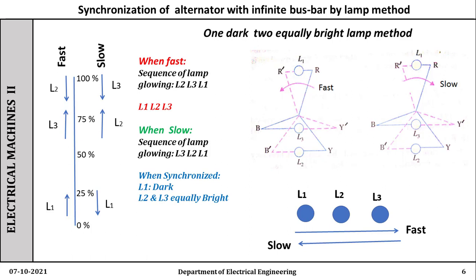In the case where the machine is slower, the magenta color phasors appear to be rotating in a clockwise direction. The voltage across L1 will start decreasing as the magenta color approaches toward the R phase — it remains dark and will not glow. The voltage across L2 is increasing and tries to approach 100 percent. Whereas the voltage across L3 has just passed 100 percent and is now decreasing.